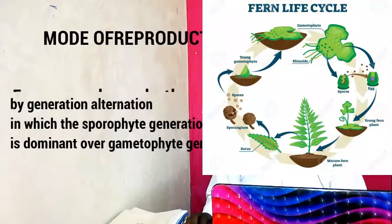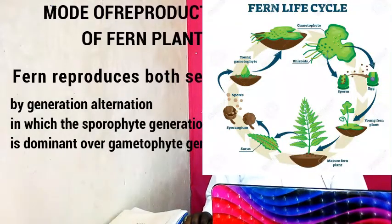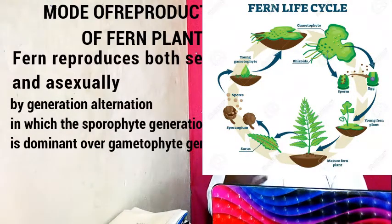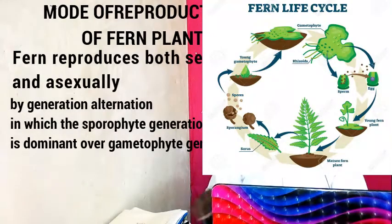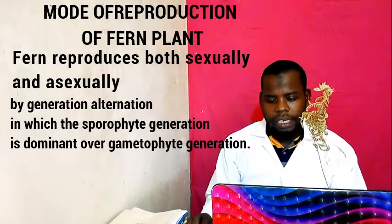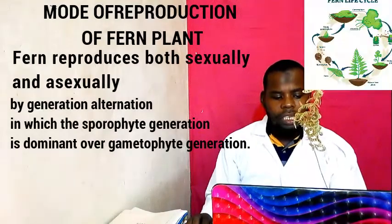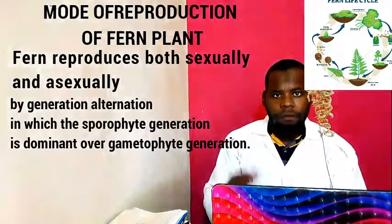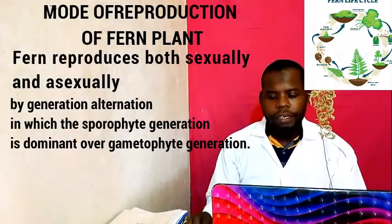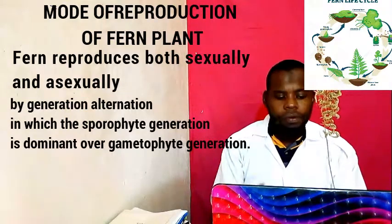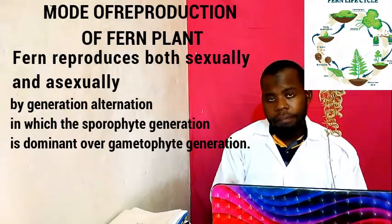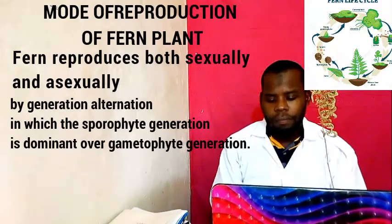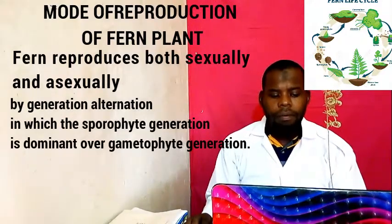Also regarding reproduction: Fern Plant, as I have said, undergoes alternation of generations. It means it reproduces both sexually and asexually by generation — alternation in which the sporophyte generation is dominant over the gametophyte generation. That is how it reproduces — both sexually and asexually.